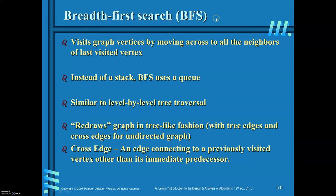When you do the BFS traversal, it traverses in a tree-like fashion, which results in two kinds of edges. One kind of edge is called a tree edge, and the other one is a cross edge. A cross edge connects a previously visited vertex other than its immediate predecessor.